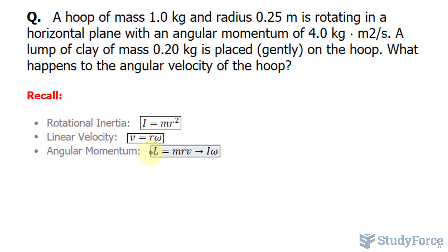Underneath that, we have the linear velocity, and linear velocity is calculated by taking the radius times the angular velocity, and that's represented by the Greek letter omega.